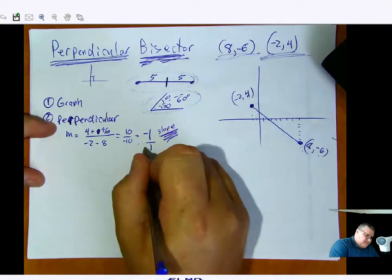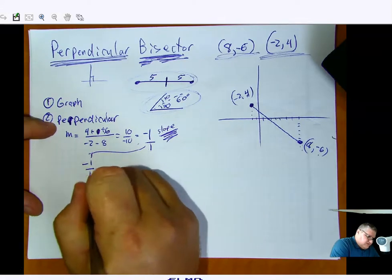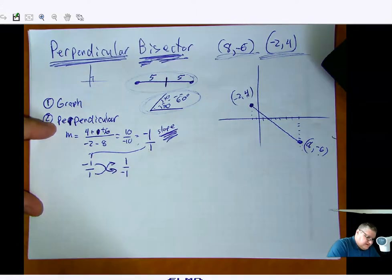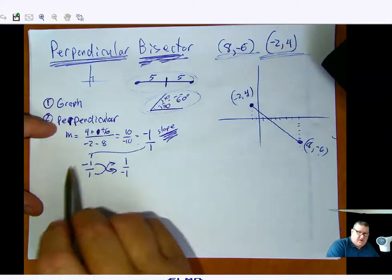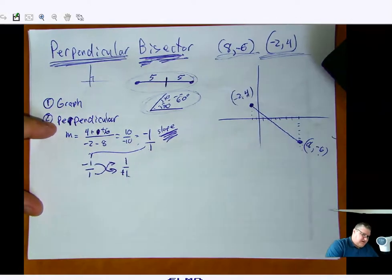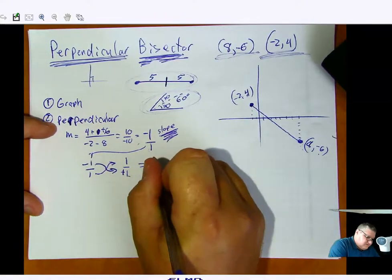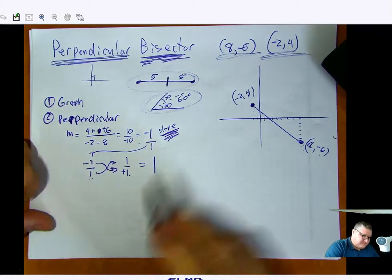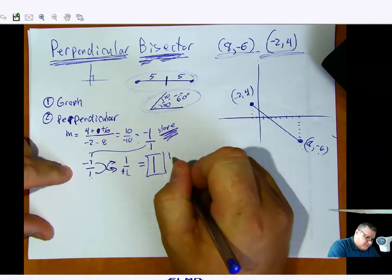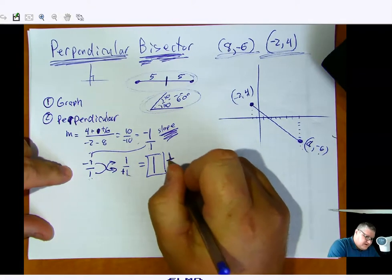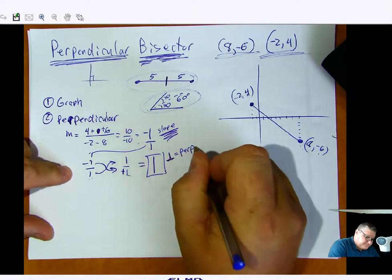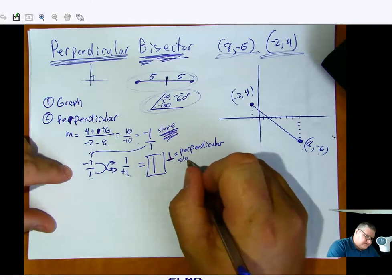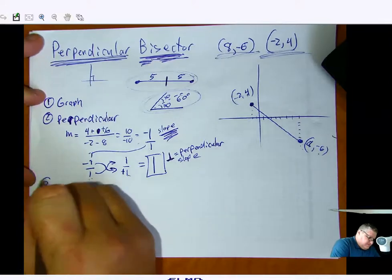What I need is a perpendicular slope. So negative 1 over 1. How do I make it perpendicular? I switch it. Now, this is kind of silly in the sense that what happens when I take negative 1 over 1 and I flip it and switch the sign? Well, it just turns into positive 1 because the top and the bottom happen to be the same number even though they were opposite signs. So my new slope, my perpendicular slope, which by the way, upside down T means perpendicular. So my perpendicular slope is 1.